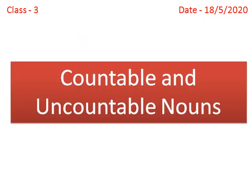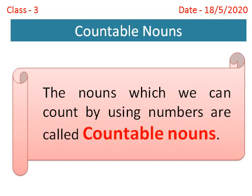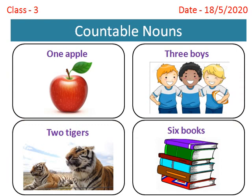Today our topic is countable and uncountable nouns. The nouns which we can count by using numbers are called countable nouns. Let's take some examples to understand this. Here you can see one apple, three boys, two tigers and six books. We can count apple, boys, tigers and books by using numbers. So, these are countable nouns.